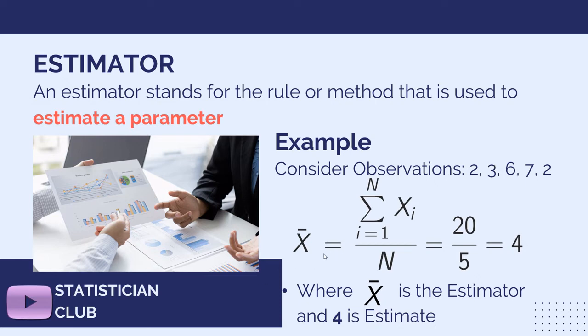This is statistic and through this statistic we calculate or draw inference about parameter which is mu. So, x bar is equal to sum of n xi over n by using arithmetic mean total sum is 20 divided by 5 is equal to 4.